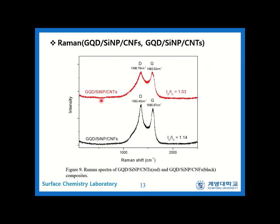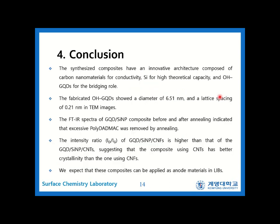In figure 9, the D/G intensity ratio of the composite using CNFs at 1.14 was lower than the one using CNTs at 1.203.